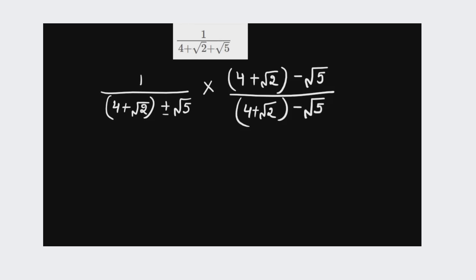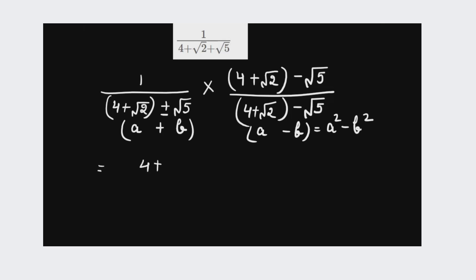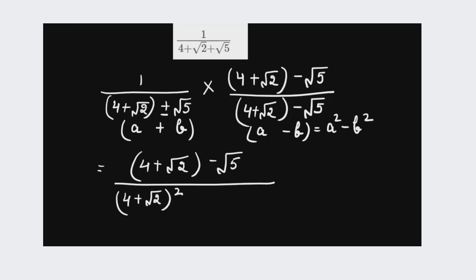What we have done here is change the sign from positive to negative — if it is negative, you change it to positive — so that we can use the formula (a + b)(a − b) = a² − b². Applying this formula, we get 4 plus root 2 in brackets minus root 5, divided by (4 plus root 2)² minus (root 5)².